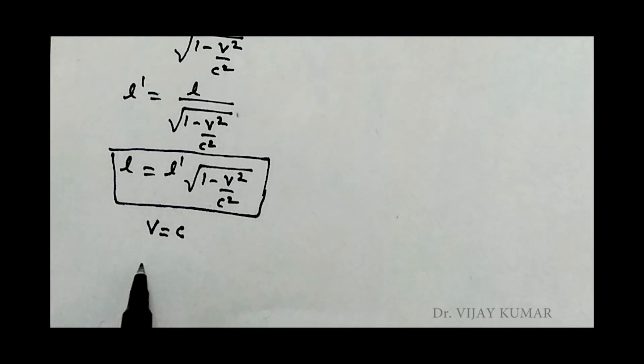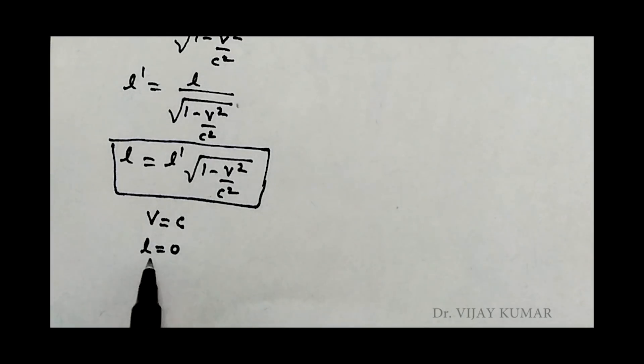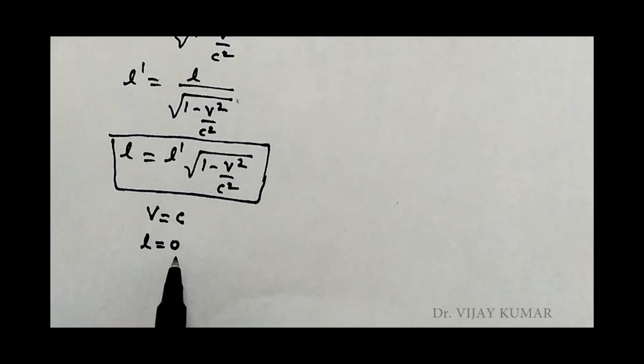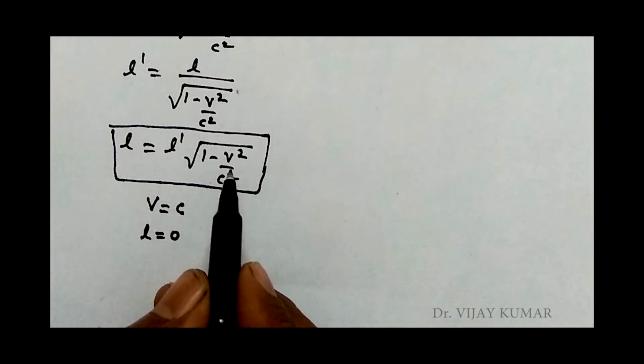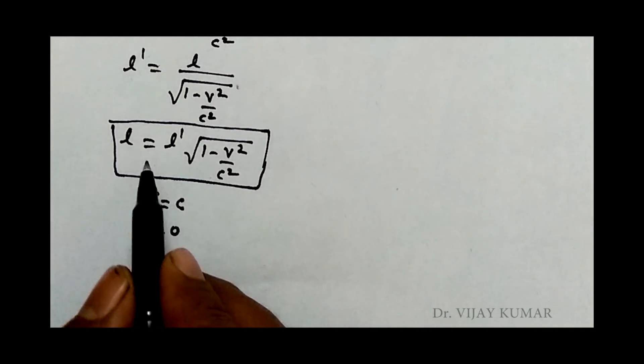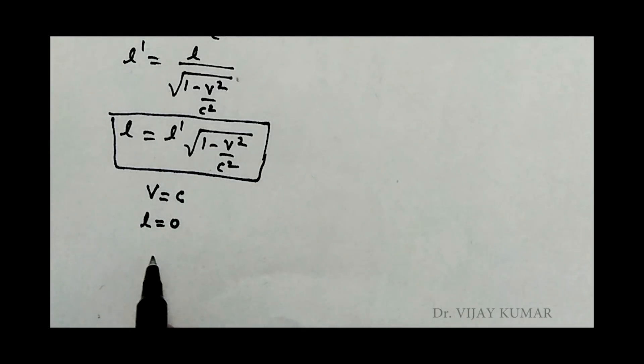Suppose the frame is moving by velocity c. It means length becomes zero. But length cannot be zero, so if the frame is moving by velocity c, then the length of the rod is contracted in such a way that it looks like a dot.